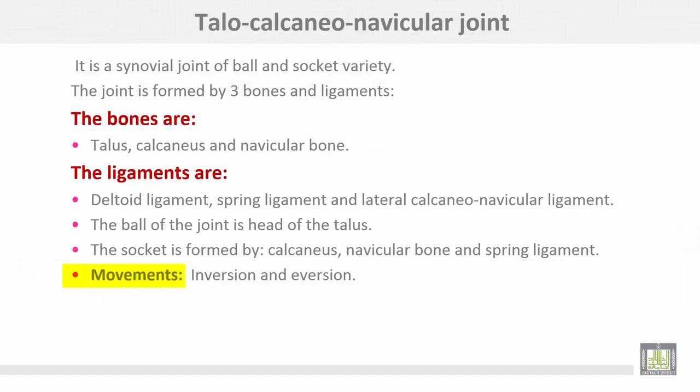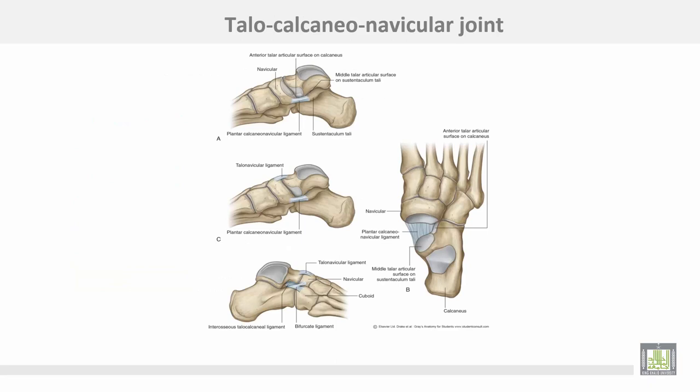The movements that occur in the talocalcaneonavicular joint are inversion and eversion. This is the talocalcaneonavicular joint between the talus, calcaneus, and navicular bone, and this is the spring ligament.